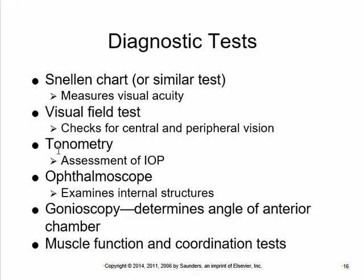Tonometry measures intraocular pressure and is used to check for glaucoma. An ophthalmoscope lets you look through the eye to examine the retina — you can see the fovea, blind spot, and blood vessels. Gonioscopy measures the angle of the anterior chamber where the canal of Schlemm is, checking where fluid is reabsorbed into the bloodstream. Muscle function and coordination tests check tracking of the eyeballs together.